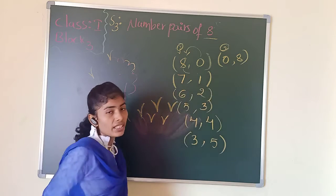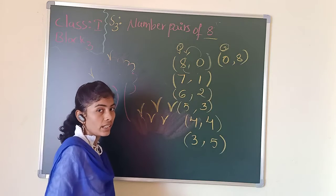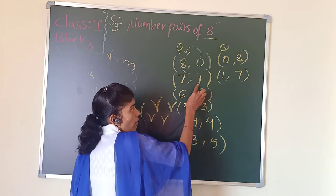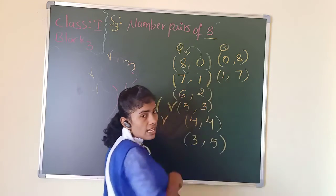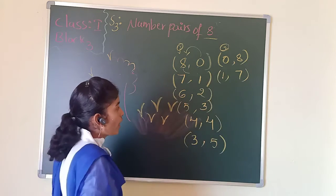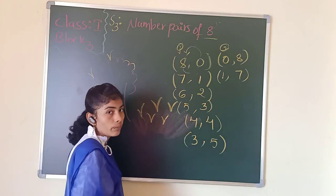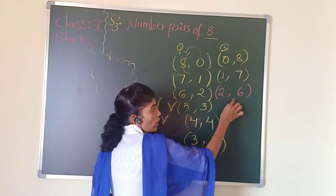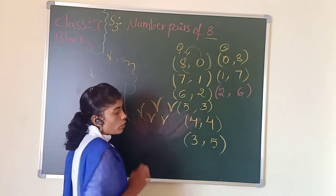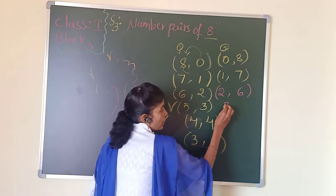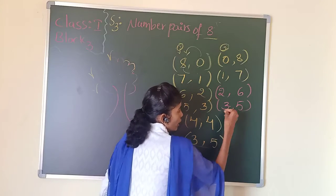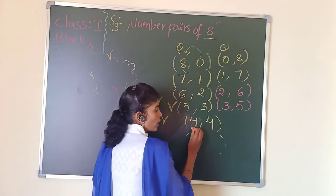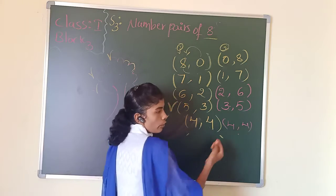Now how can we flip 7 comma 1? The flip is 1 comma 7. If 7 comma 1 is a number pair for 8, then 1 comma 7 is also a number pair for 8. What is the flipping of 6 comma 2? That is 2 comma 6. And what is the flipping of 5 comma 3? That is 3 comma 5. What is the flipping of 4 comma 4? It stays the same — 4 comma 4 — both numbers are the same.